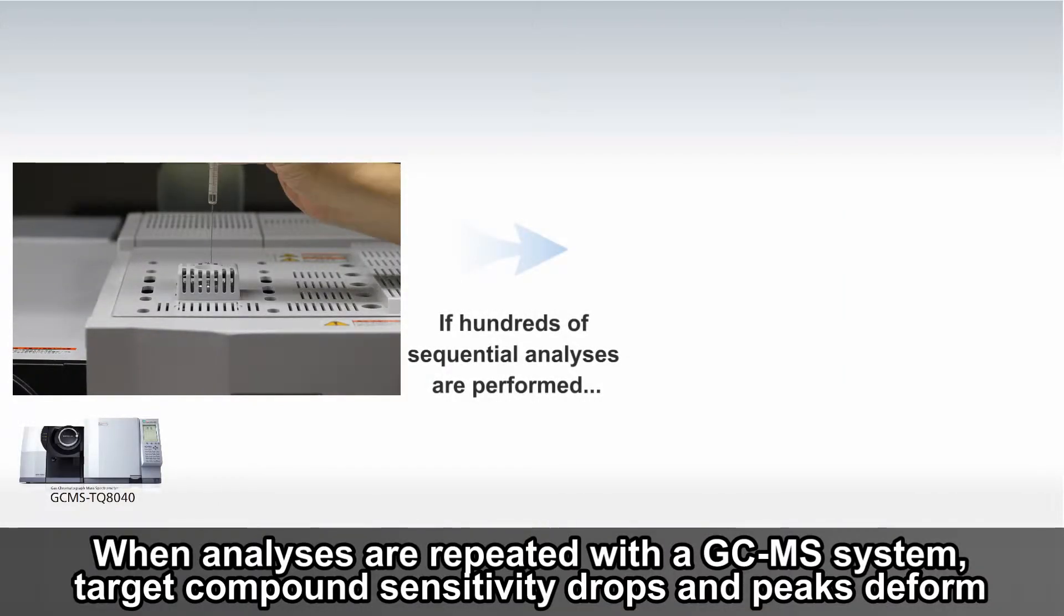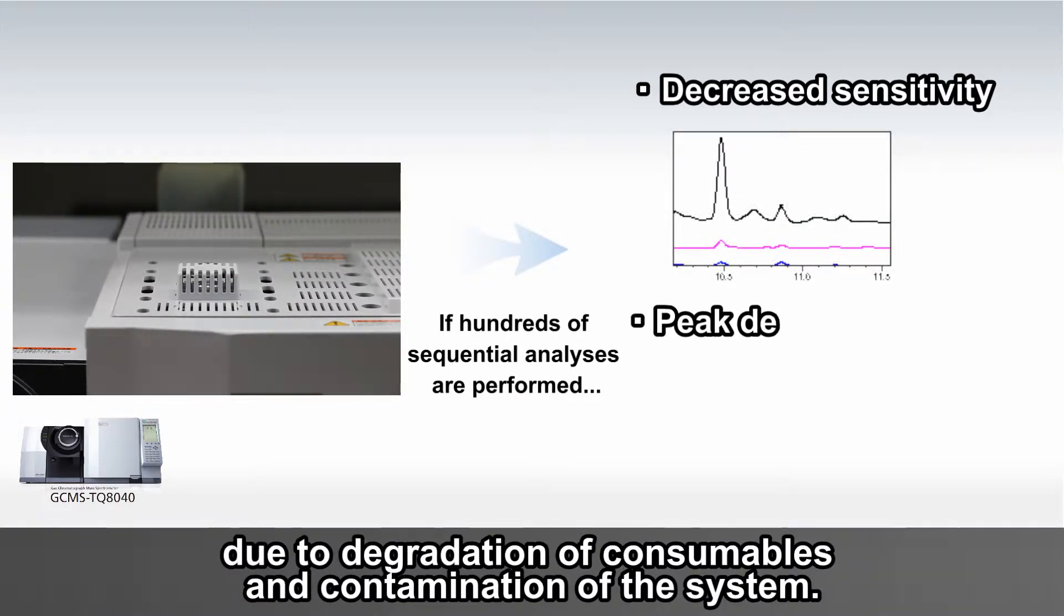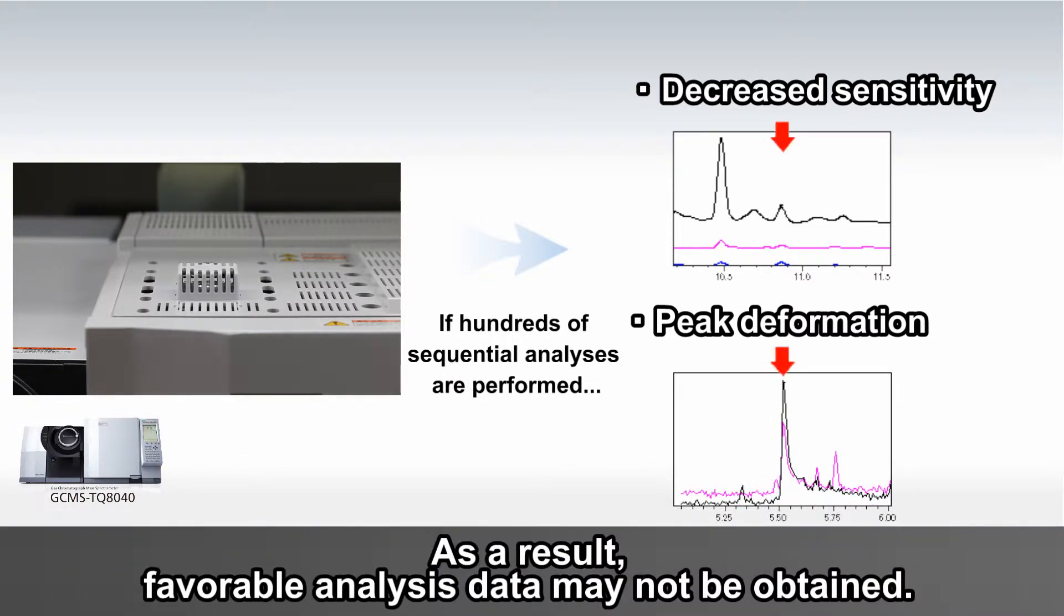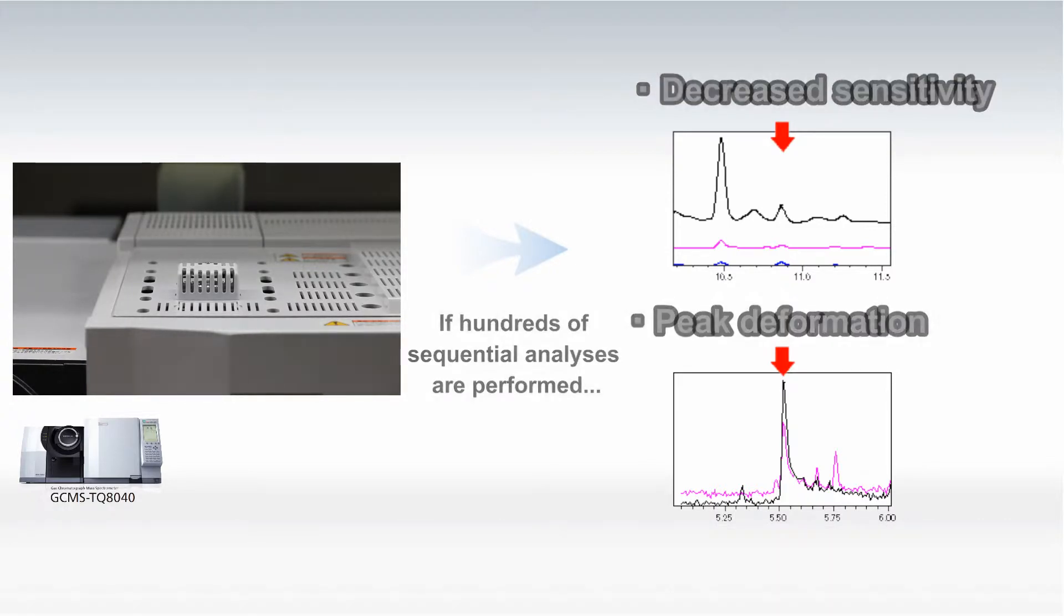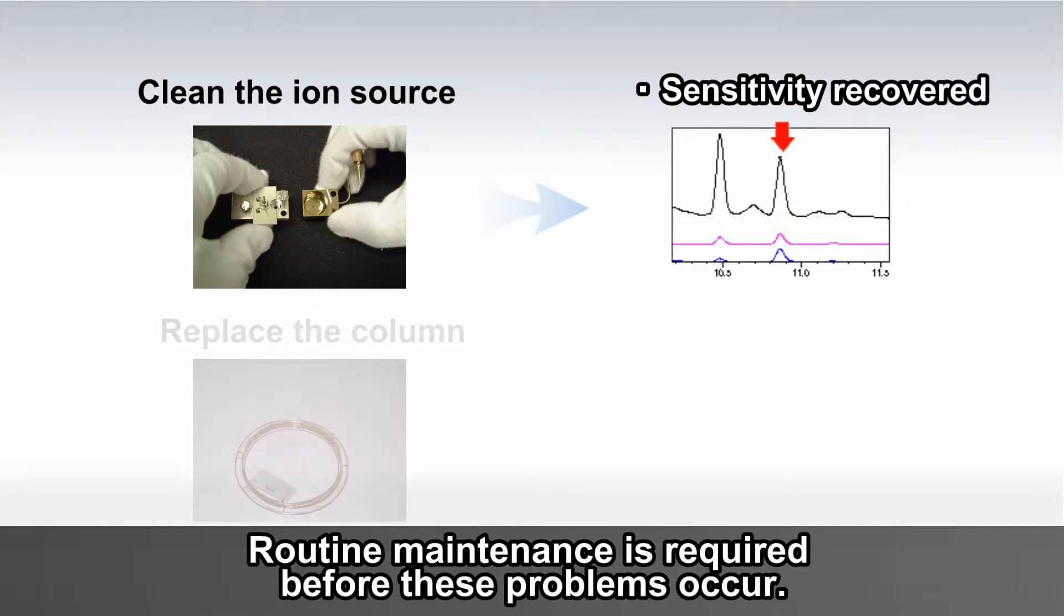When analyses are repeated with the GC-MS system, target compound sensitivity drops and peaks deform due to degradation of consumables and contamination of the system. As a result, favorable analysis data may not be obtained. Routine maintenance is required before these problems occur.